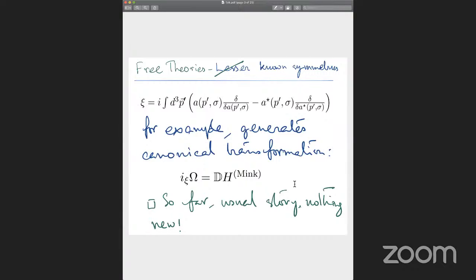I am for simplicity talking about the scalar field theory, free scalar field theory. These are the very well-known, well-understood symmetries when you have a free scalar field theory in Minkowski space-time. I prefer to use this notation sometimes where Xi is a vector field on the covariant space. And sometimes it's convenient to work in terms of the symplectic or the pre-symplectic structure rather than the Poisson brackets.